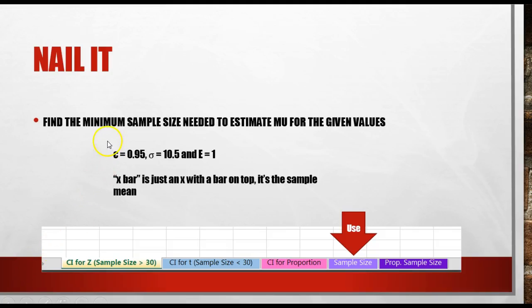All right, let's look at another problem. This one says find the minimum sample size needed to estimate mu for the given values: a confidence of 95%, a sigma of 10.5, and a maximum error of 1.